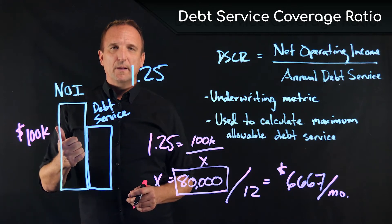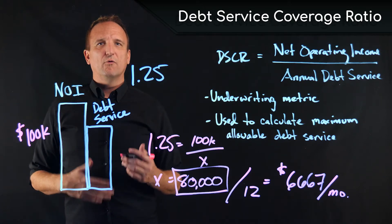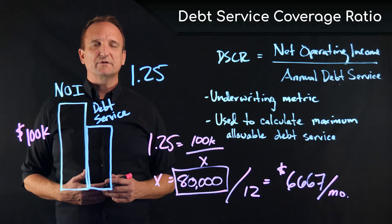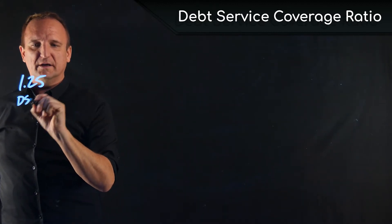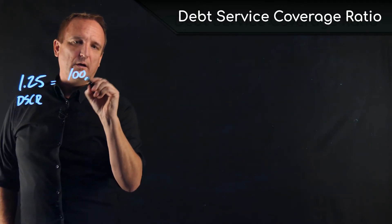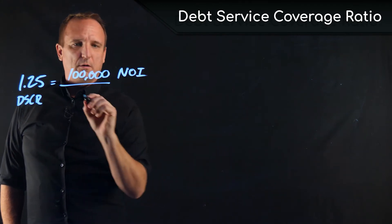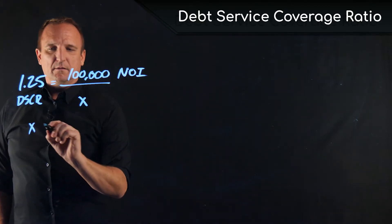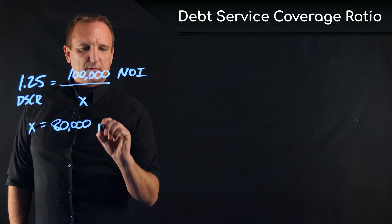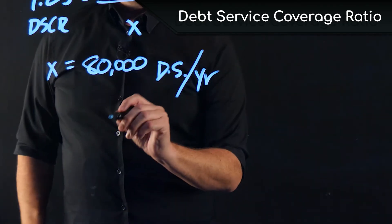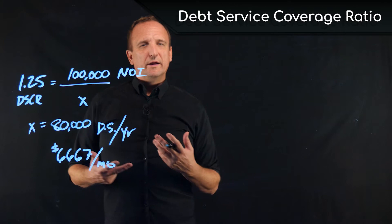If interest rates go up, the payment cannot go up beyond that. So if interest rates rise, the loan amount would have to go down in order for us to stay within the minimum required debt service coverage ratio. We've already determined that our minimum DSCR is 1.25 and we have $100,000 in net income, so our maximum debt service is $80,000 per year, or $6,667 per month.